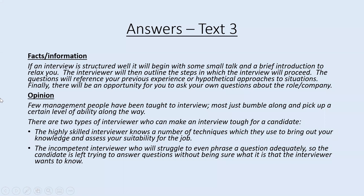In an exam situation you may find a question which asks you to cite where the author has made suggestions that back up a certain point of view, or where they've used information specific to what you're reading about. So in something like text three you might be asked to give examples of how an interview can be structured successfully, and you might find that within the facts and information the author has used. You might also be asked to identify where the author has put forward how we can identify a poor interviewer, looking for the author's point of view or opinion. You could, for example, quote what the author has said about an incompetent interviewer as part of that answer.